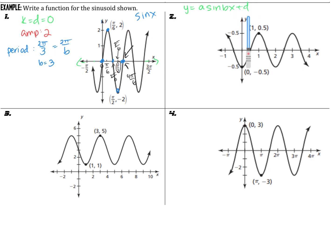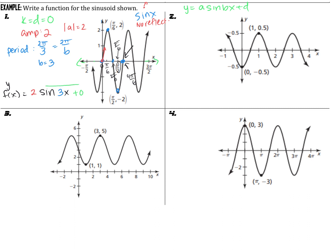So we've identified: center D = 0, it's a sine graph (it makes that sideways S look), and B = 3. The amplitude (absolute value of A) is 2. For the reflection check: normal sine starts at center and goes up — this sine is also starting at center and going up, so there is no reflection. Our function is: f(x) = 2 sin(3x) + 0, or simplified, y = 2 sin(3x).